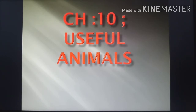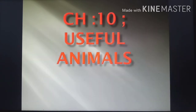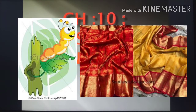Animals give us leather and silk. Leather is used for making our purses, belts, shoes, and bags. Some people use leather products. Animals also give us silk. We get silk fiber from silkworms. We get shiny clothes from silk fiber.